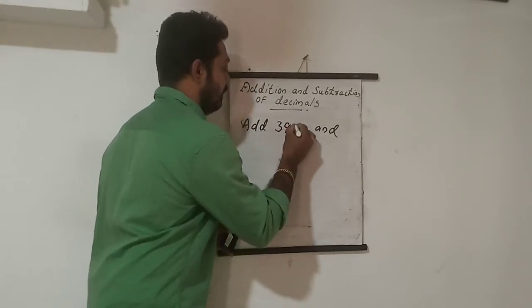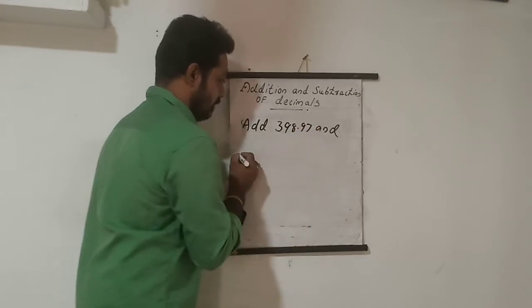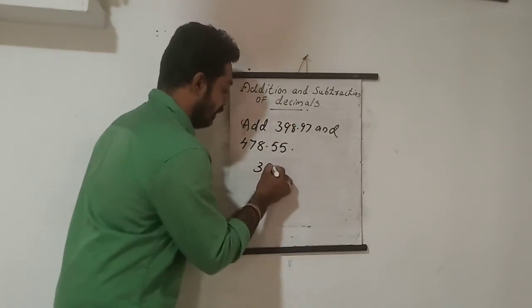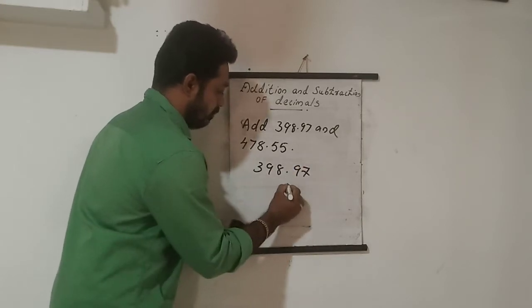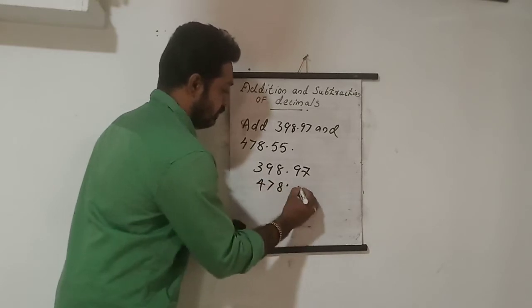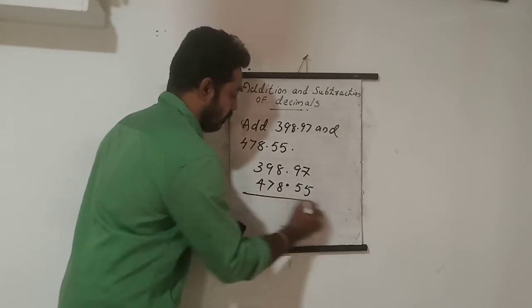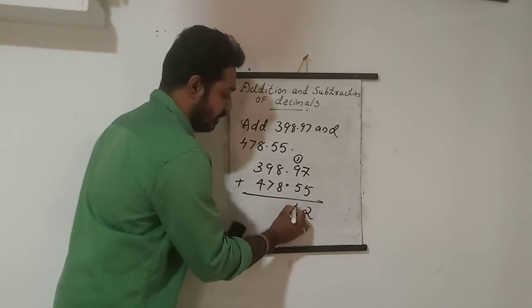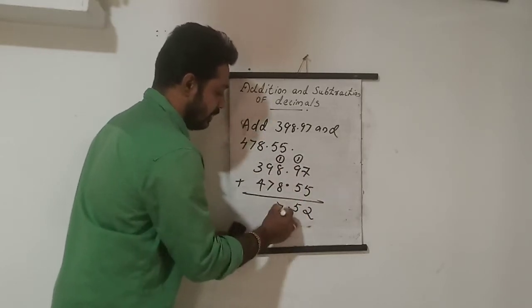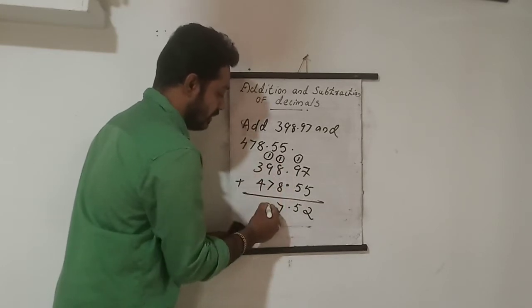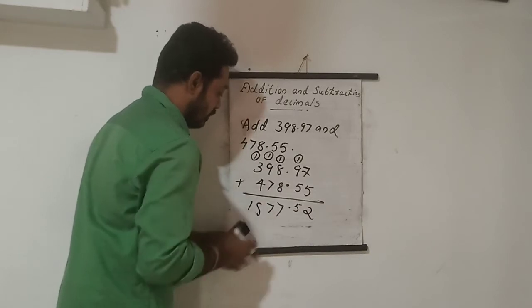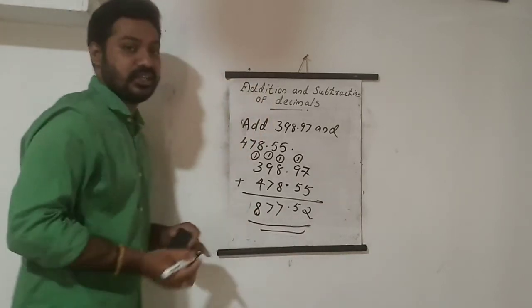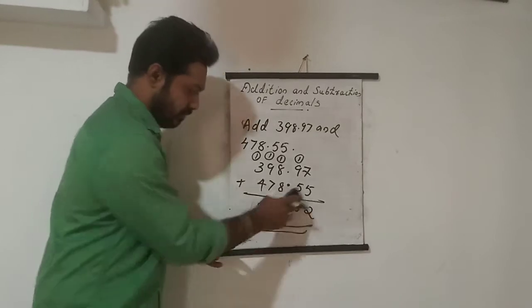Next example: 398.97 plus 478.55. Write 398.97 then 478.55 aligned. Seven plus five is 12, carry one; nine plus five is 14 plus one is 15, carry one; eight plus six is 16 plus one is 17, carry one; nine plus one is ten plus one is 17, carry one; four plus three is seven plus one is eight. The answer is 877.52. Simple addition, same process with carry over.